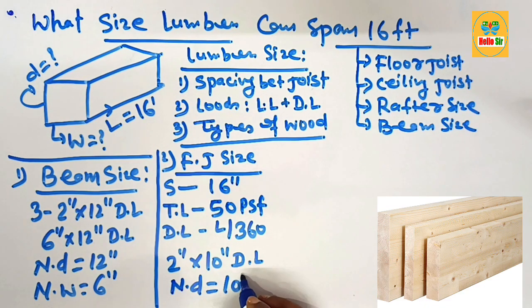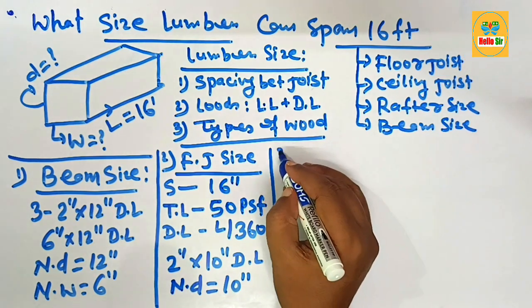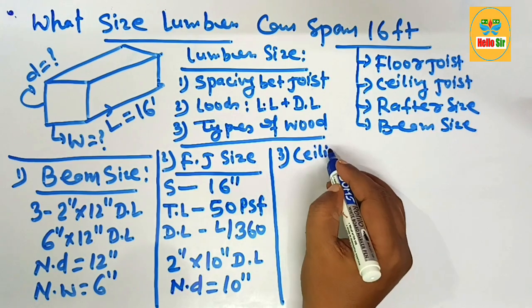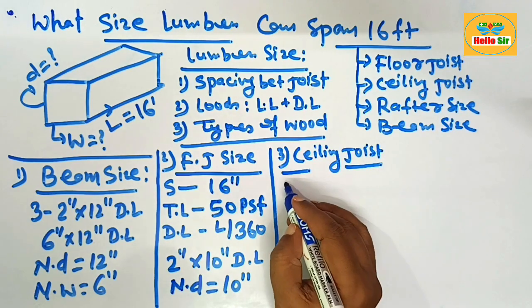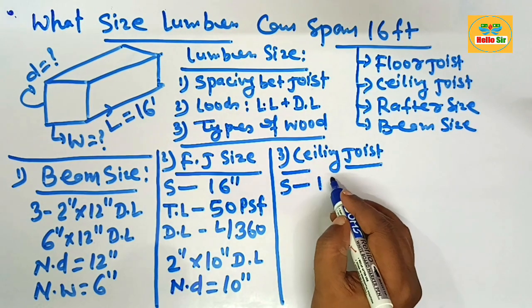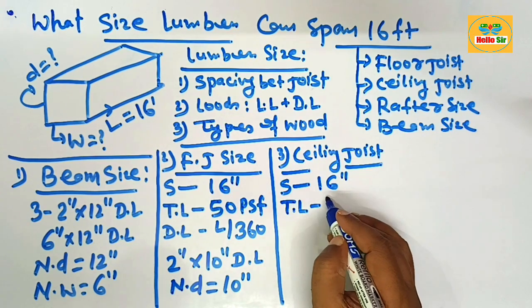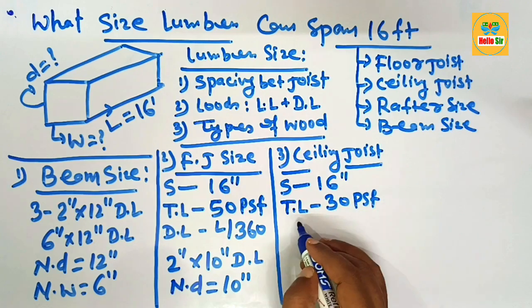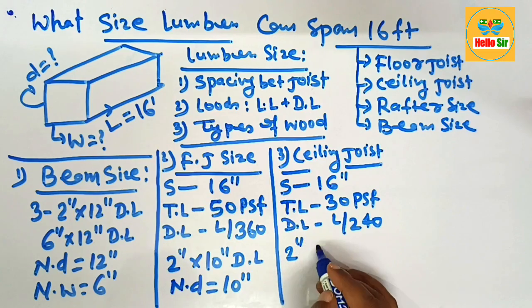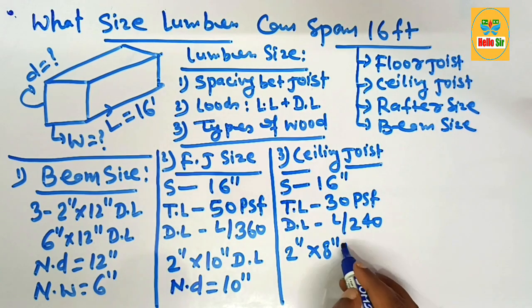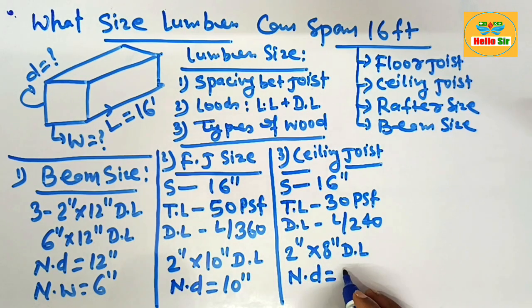You can use 2-inch by 10-inch dimensional lumber as a floor joist to span 16 feet, with a nominal depth of 10 inches. Now, for ceiling joist size required to span 16 feet: the spacing between ceiling joists is 16 inches on center, the total load is 30 psf, and the deflection limit is L/240.